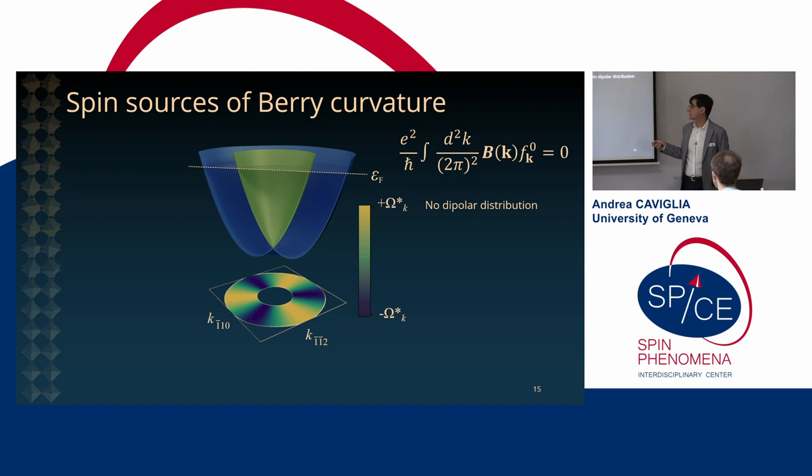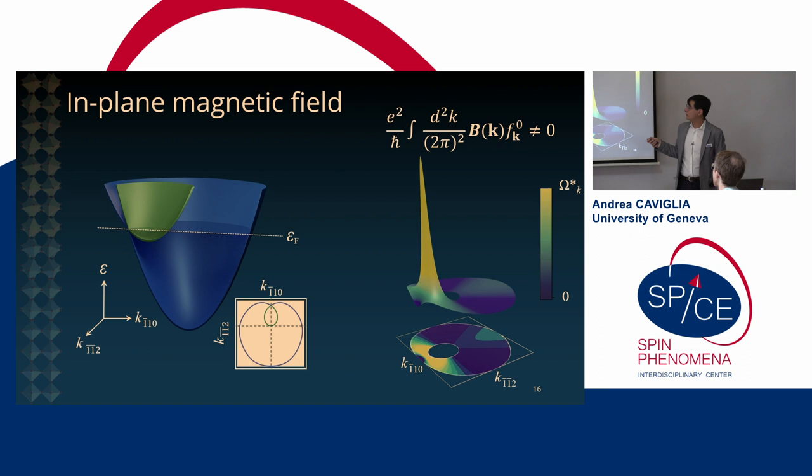However, if you take this system and we apply an in-plane magnetic field then things dramatically change. So in the presence of an in-plane magnetic field now the Zeeman coupling will cause this band to cross each other and around these crossing points we're going to have very sharp sources of Berry curvature and now do not average out to zero. So we have broken time-reversal symmetry and now we have this very strong source of Berry curvature that have a purely spin origin. So these are due to spin-orbit coupling that are mixing the bands at a finite crystal momentum.